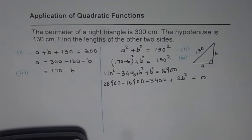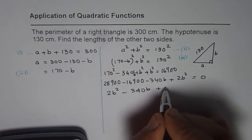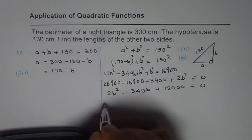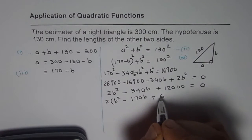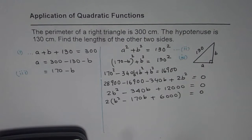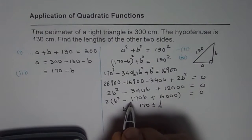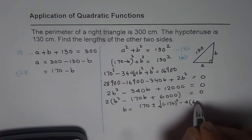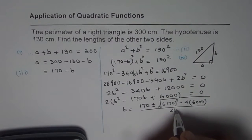This simplifies to 2B squared minus 340B plus 12,000 equals 0. That is the quadratic equation. Let us factor out 2, giving us B squared minus 170B plus 6,000 equals 0. Now we can solve this using the quadratic formula: B equals 170 plus or minus the square root of 170 squared minus 4 times 1 times 6,000, all divided by 2 times 1.